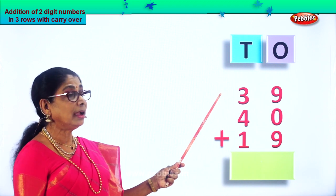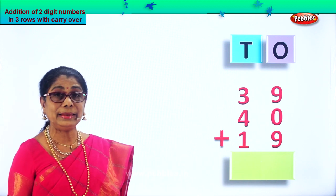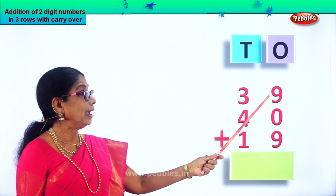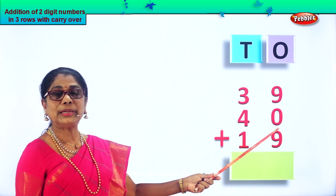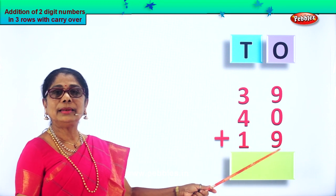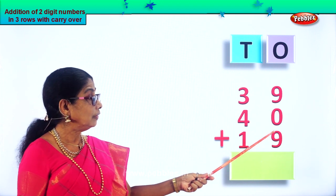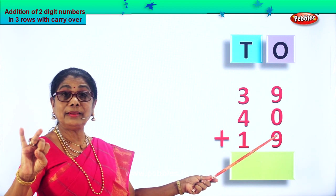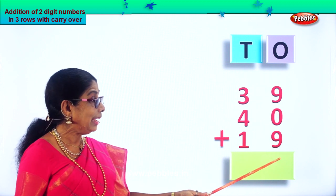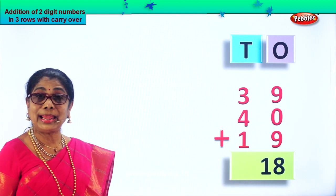Here we have thirty-nine plus forty plus nineteen. Let's add all the ones: nine plus zero plus nine. Nine plus zero is nine itself. Plus another nine — nine in the mind and nine in your fingers. After nine: ten, eleven, twelve, thirteen, fourteen, fifteen, sixteen, seventeen, eighteen. That is ten plus eight — one ten and eight ones.